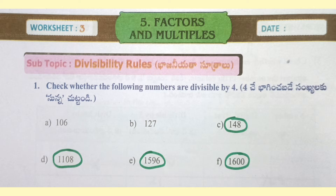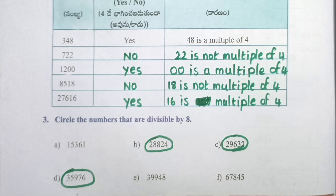Worksheet 3. Check whether the following numbers are divisible by 4. 148, 1108, 1596, 1600 are divisible by 4. 348 — yes, 48 is a multiple of 4. 722 — no, 22 is not a multiple of 4. 1200 — yes, 0 is a multiple of 4.